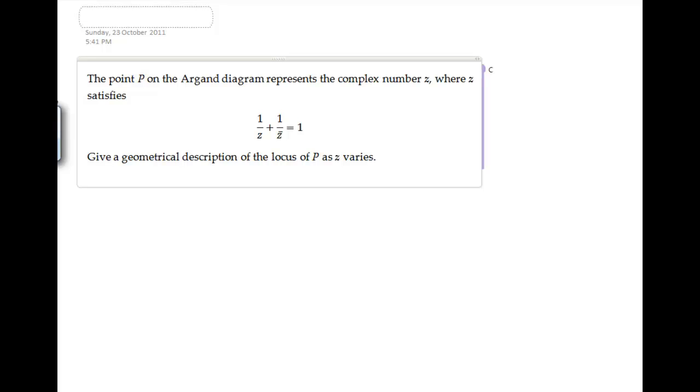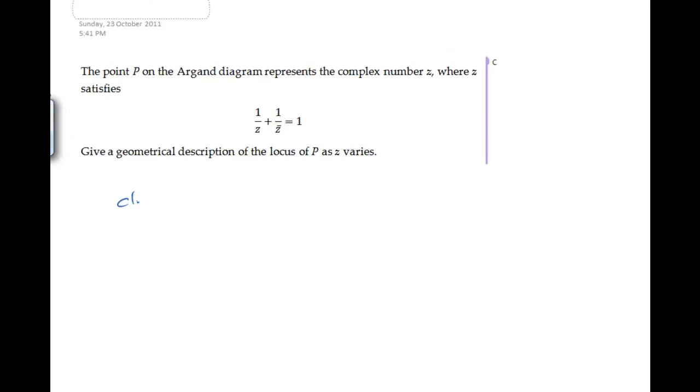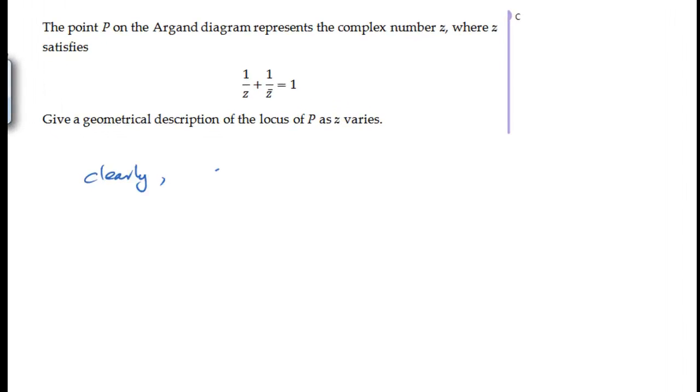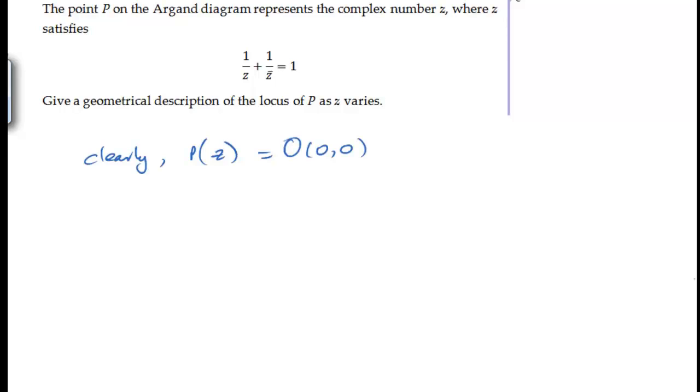Now, a quick analysis shows us clearly that Z cannot be, or the point P, sorry, cannot be the point (0, 0), which is the origin. The reason being, if you put (0, 0) in there, you will have 1 over 0, you get undefined. Now, in trying to analyze this locus, my suggestion to you is to try and play around with the equation first, the given equation.